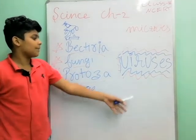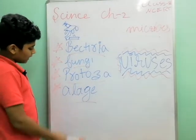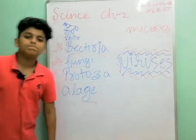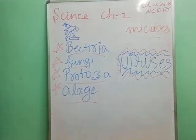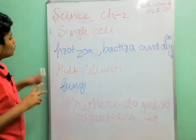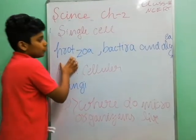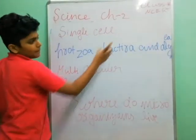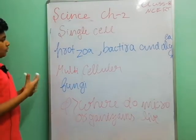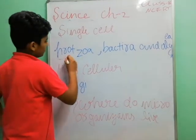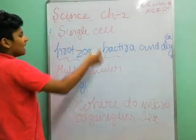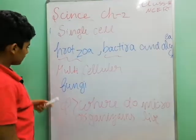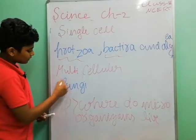Now we will explain the details. All the microorganisms will be covered. Algae and bacteria are all single-celled organisms. And the multicellular ones include fungi. Now we know where fungi come from.